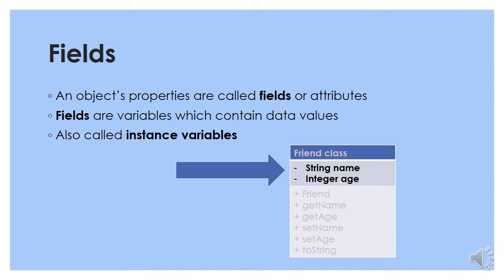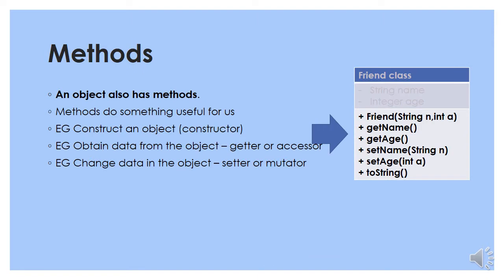So if we had an example of the Friend class, we could have two fields: a name, which would be a String, and an integer called h. Objects also have methods, and methods do something useful for us. An example would be a constructor, which constructs an object, or an accessor or getter method, which obtains data from an object. To change the object, we use a setter or mutator. And here are examples of the methods in the Friend class.